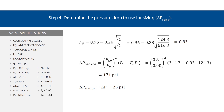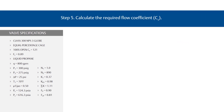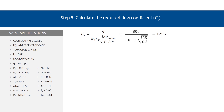Finally, for Step 5, calculate the required flow coefficient or CV. Use the standard equation for CV and plug in the variables for a result of 125.7.